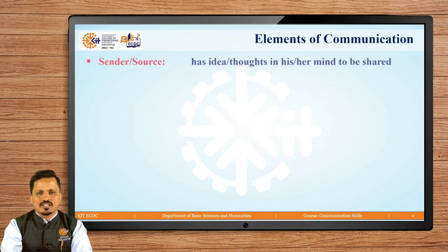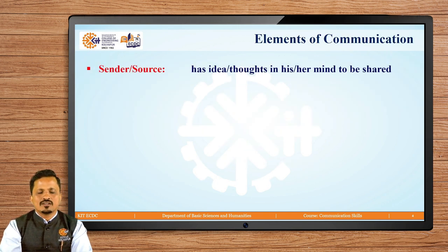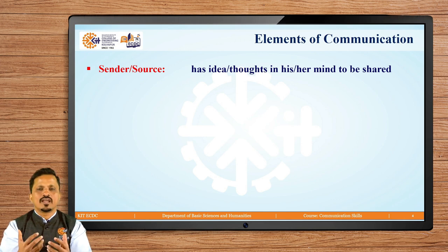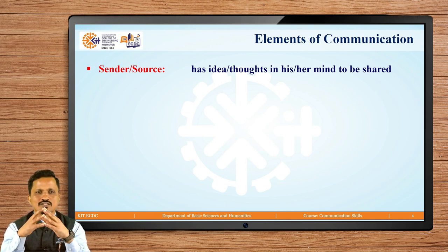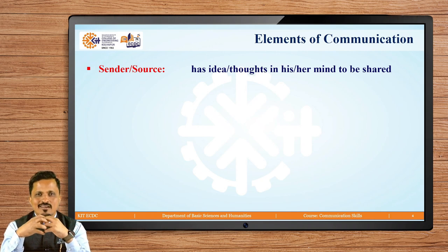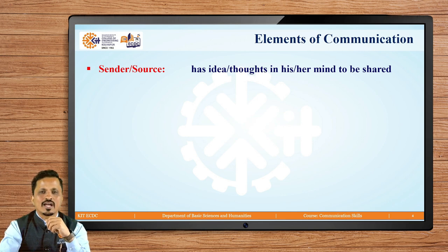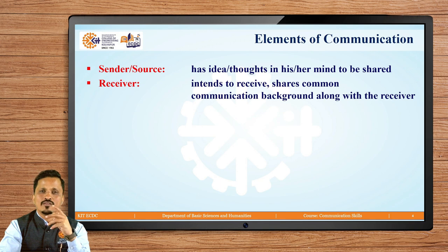Elements of communication — when communication takes place, various elements are involved, each playing a different role. The first one is the sender or the source. The sender has ideas or thoughts in his or her mind and wants to share those ideas and thoughts with the receiver.